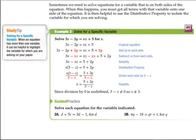Sometimes we have to solve equations for a variable that is on both sides of the equation. So when this happens, you've got to get all the terms with that variable onto one side, and then use the distributive property to isolate the variable. And so here's what we mean by that. So say we're solving this for X. So we're looking to get that X right there, and it's on both sides by itself.